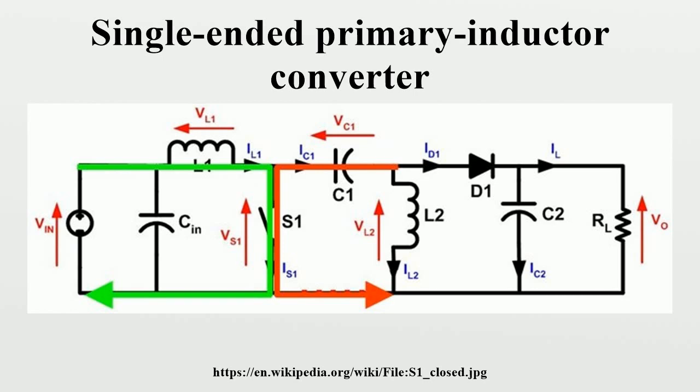Using Kirchhoff's current law, it can be shown that ID1 equals IC1 plus IL2. It can then be concluded that while S1 is off, power is delivered to the load from both L2 and L1.